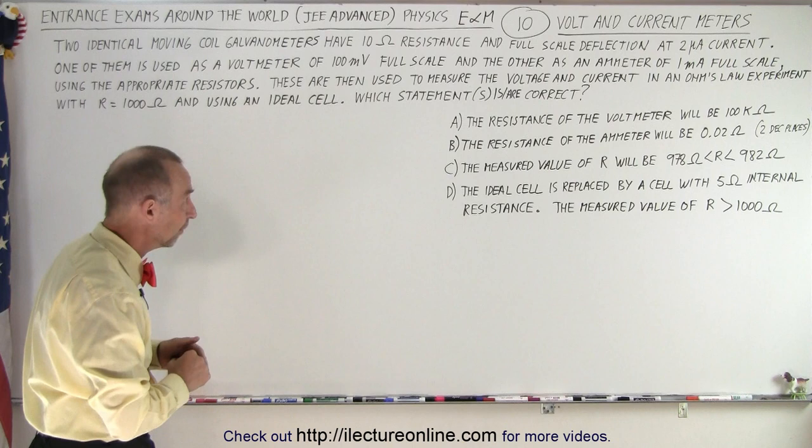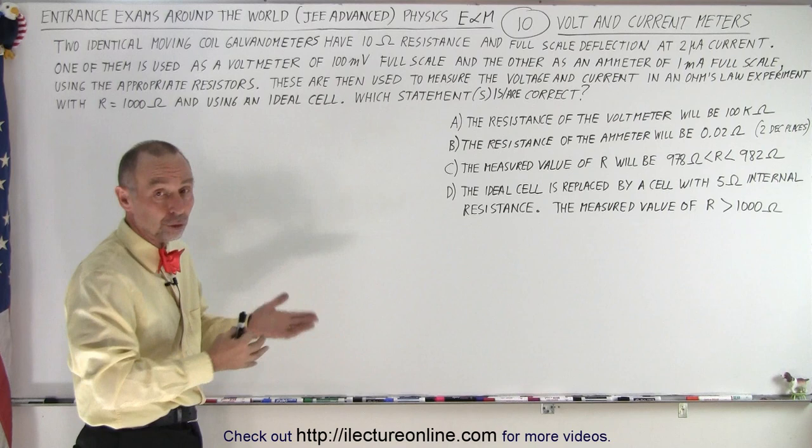Then which of the statements is or are correct? Could be one, could be all, could be a few of them. Alright, before we try to answer the question,